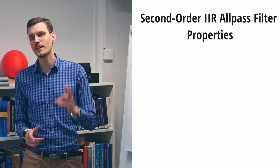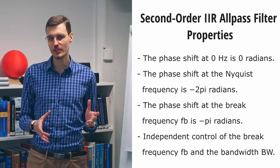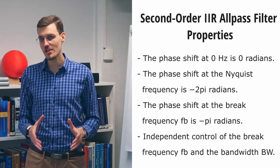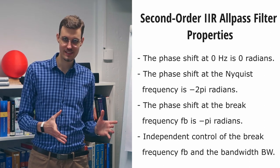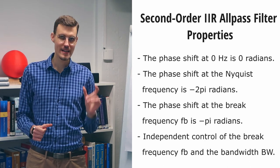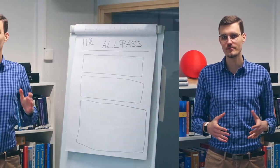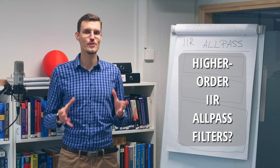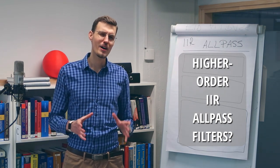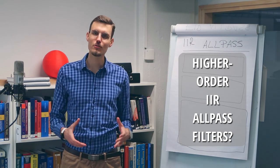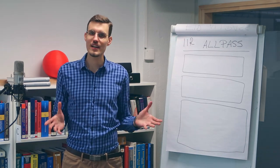To recap, the properties of the second-order IIR ALLPASS filters are the following. The phase shift at zero hertz is again zero. The phase shift at the Nyquist frequency is minus two pi. The phase shift at the break frequency is minus pi. And we can independently control the break frequency and the steepness of the phase response curve. Now you may wonder, are there even higher-order ALLPASS filters? Of course there are, but they aren't so musically useful and are much more difficult to analyze. Thus in practice I have encountered only first- and second-order ALLPASS filters. So now you're all set to use them too.